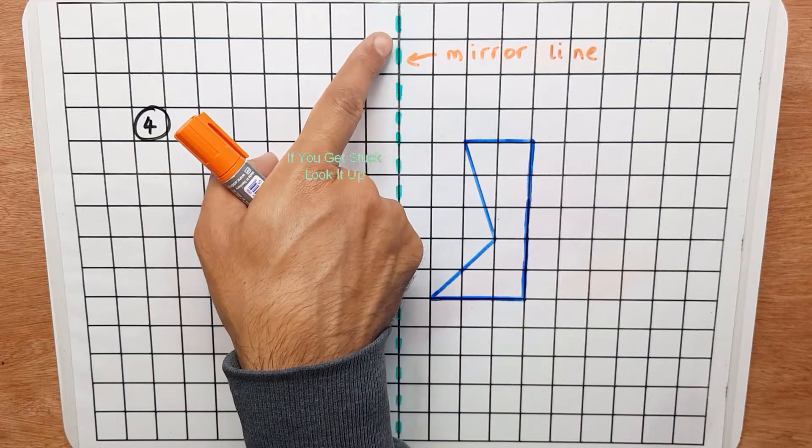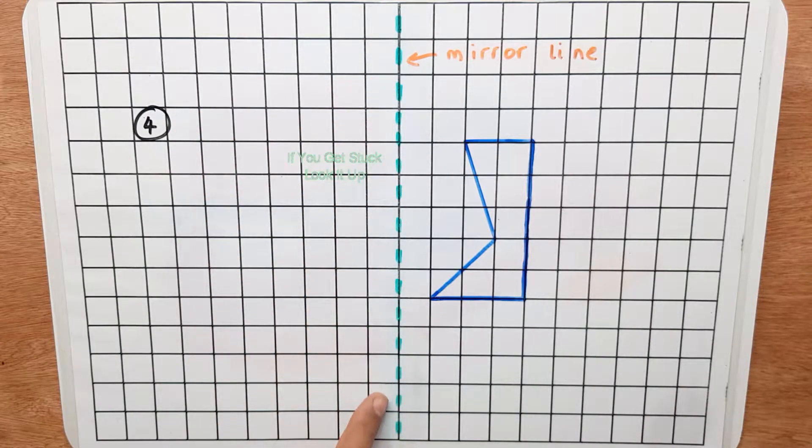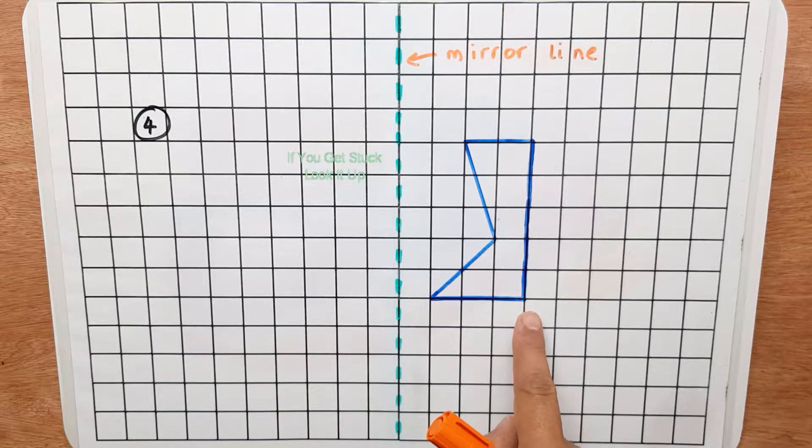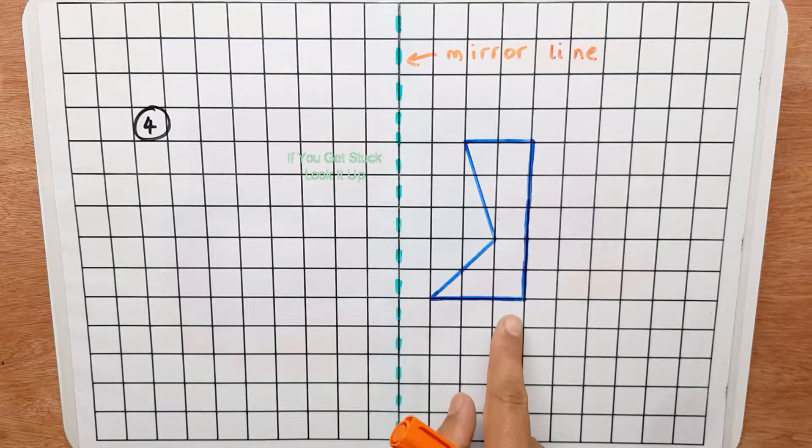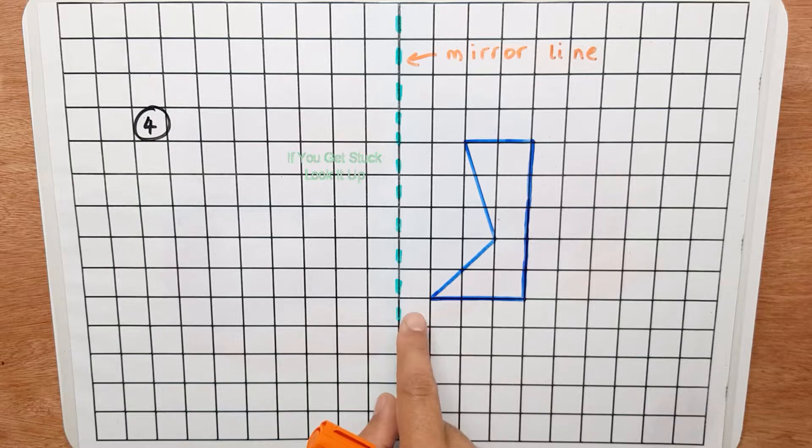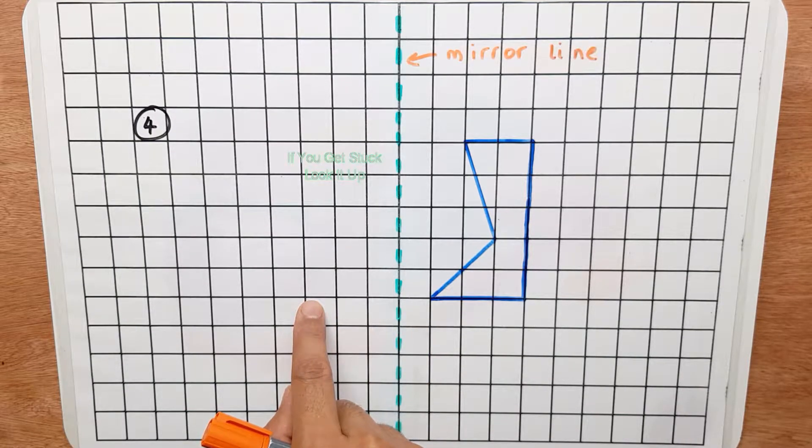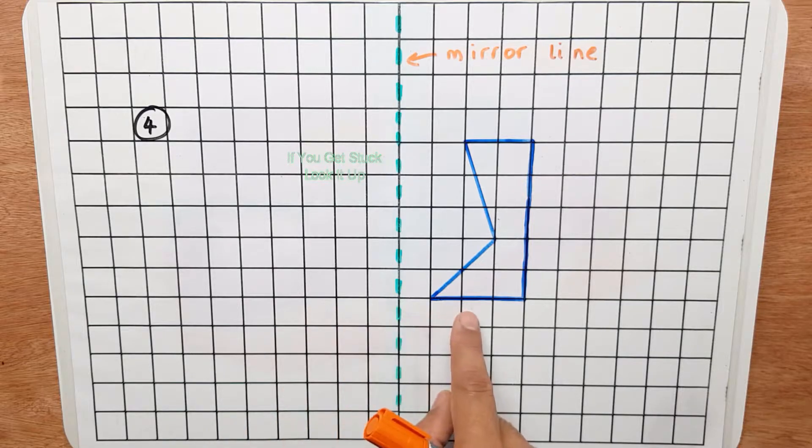In this question we're given this mirror line that runs up and down the page and we're given this shape, and we're asked to reflect this shape in this mirror line onto this side. Now it's not as difficult as it looks.